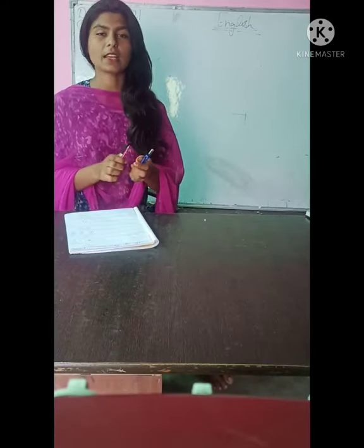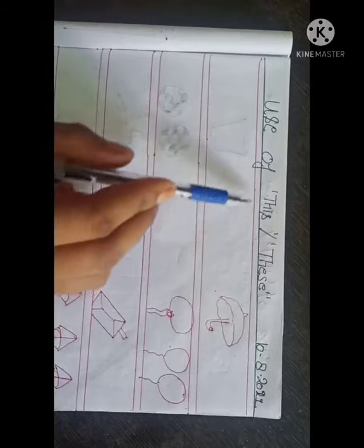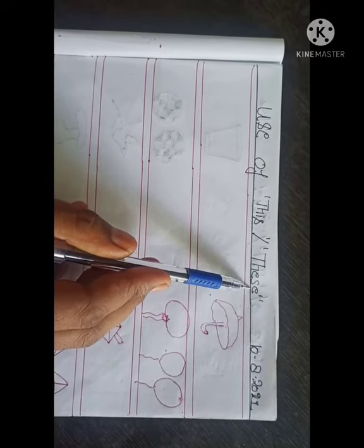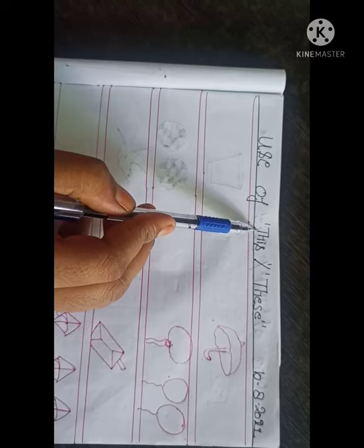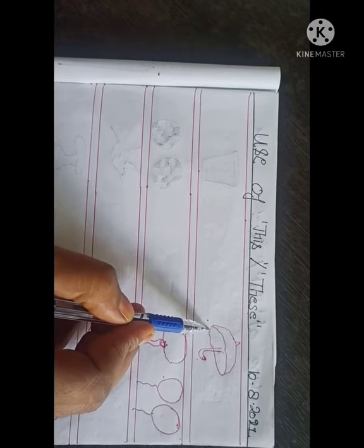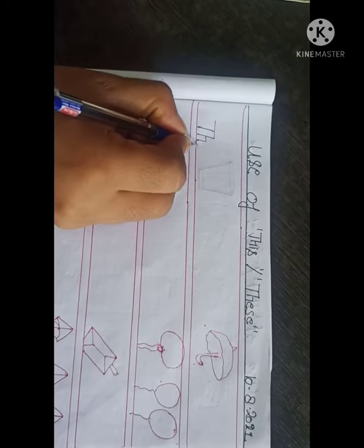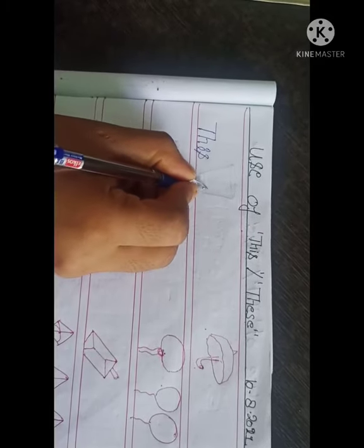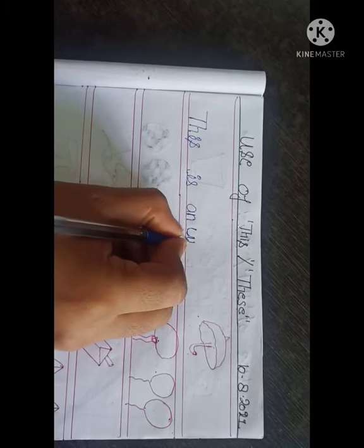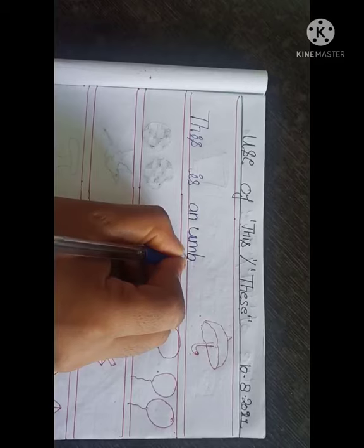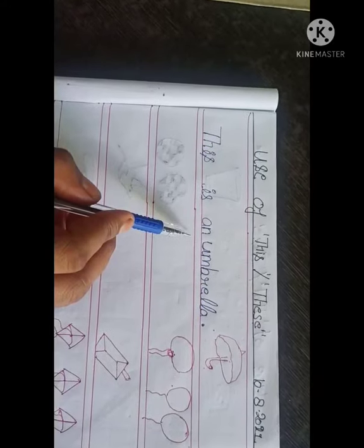Students, this is your copy exercise. So firstly, in this exercise we will use this and these. I will show you one example and you will do the rest. Like this is umbrella. So firstly we will write T-H-I-S this is, this is an umbrella, A-M-B-R-E-L-L-A.